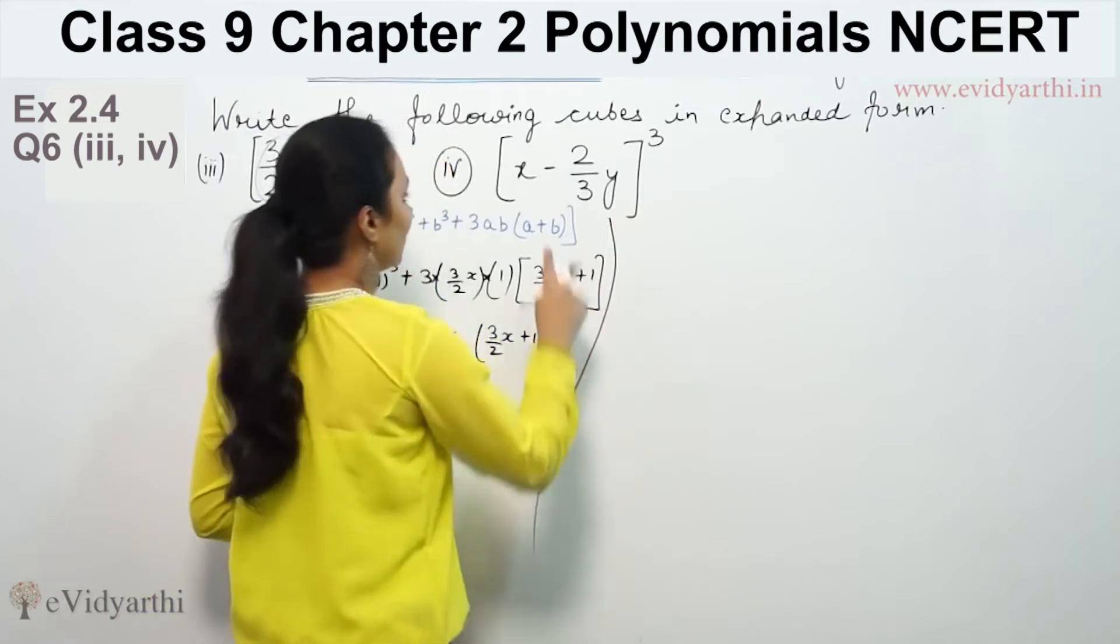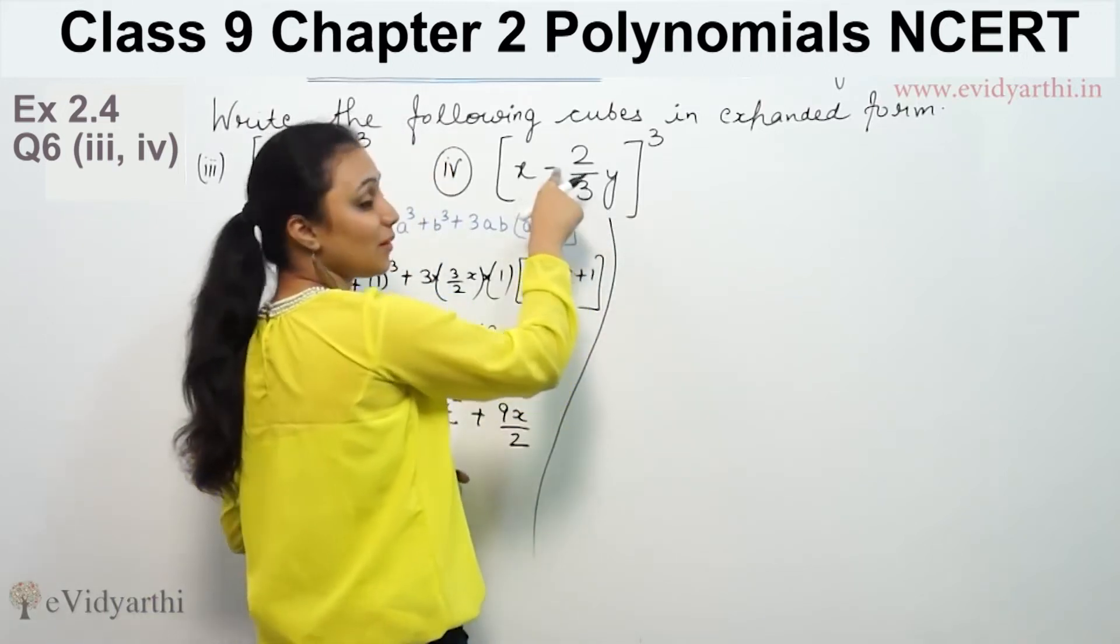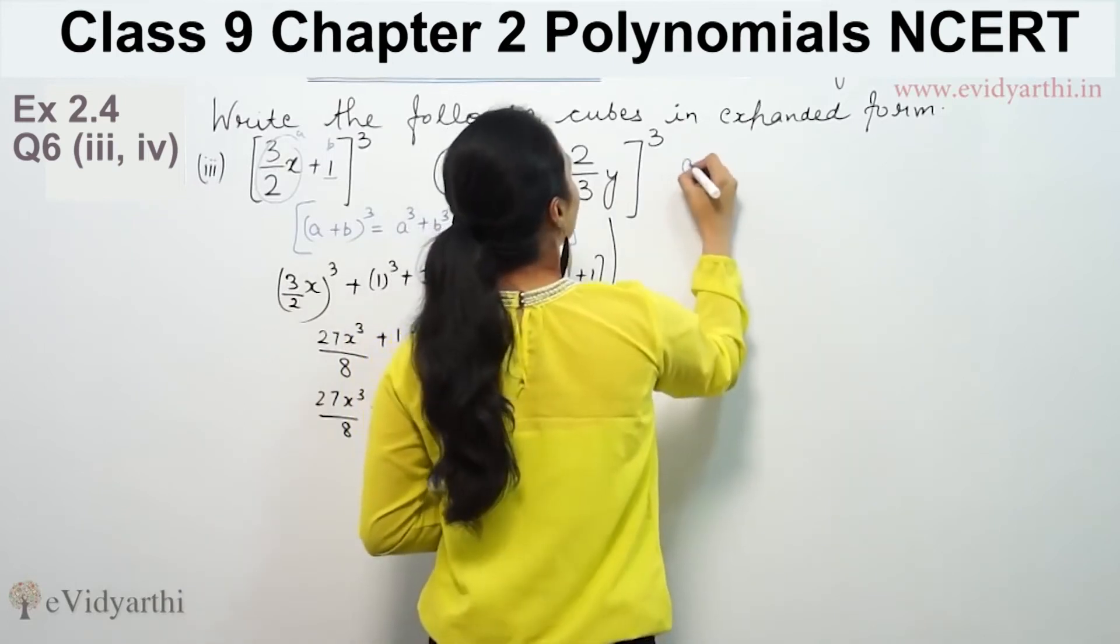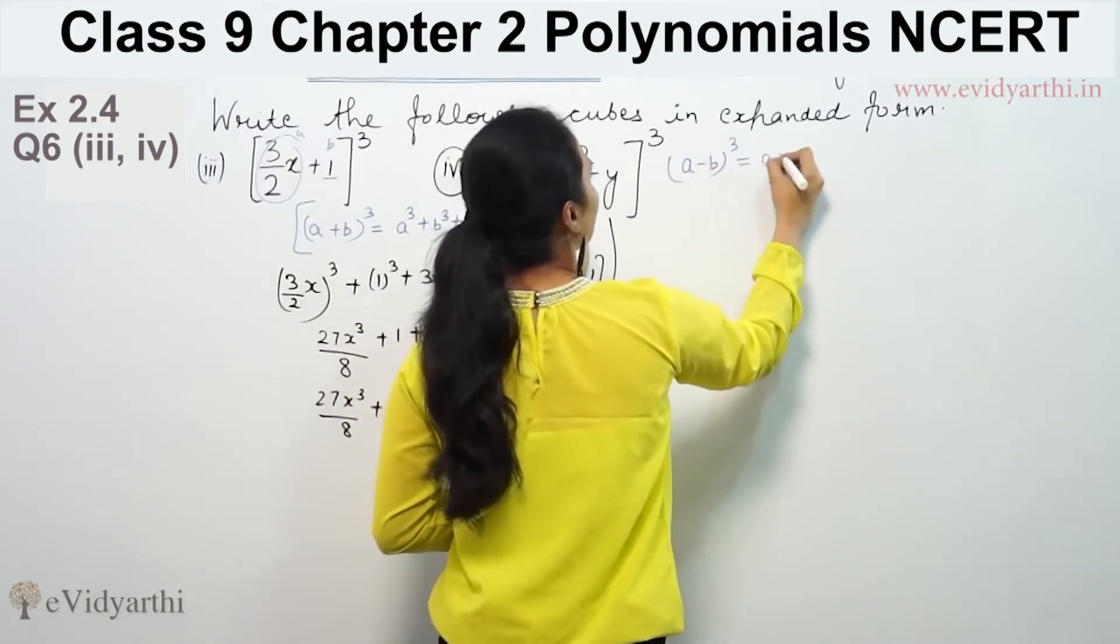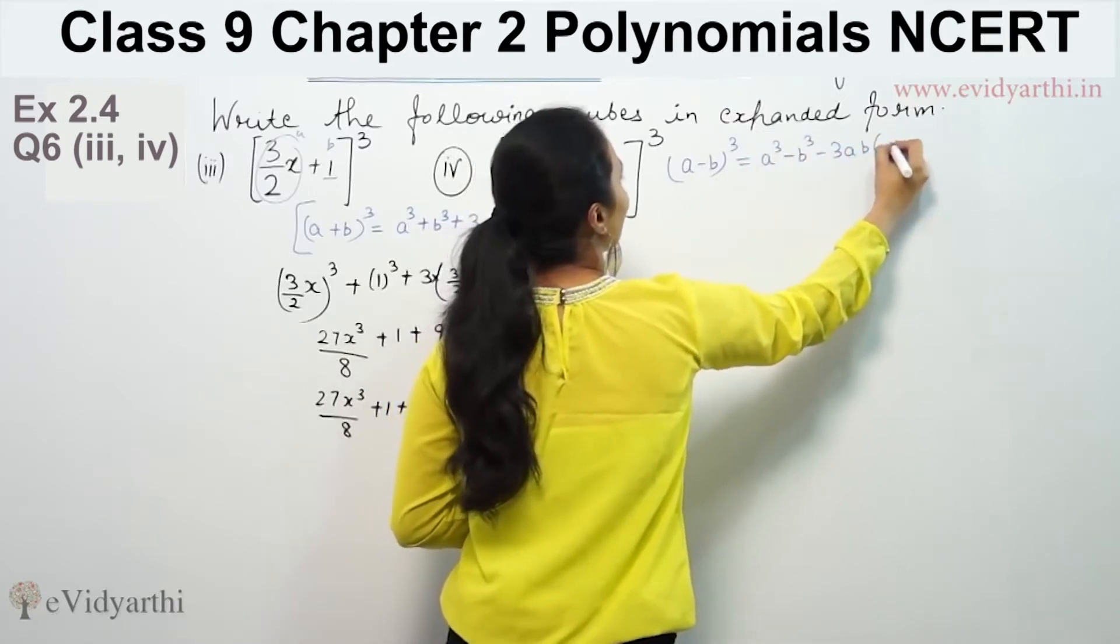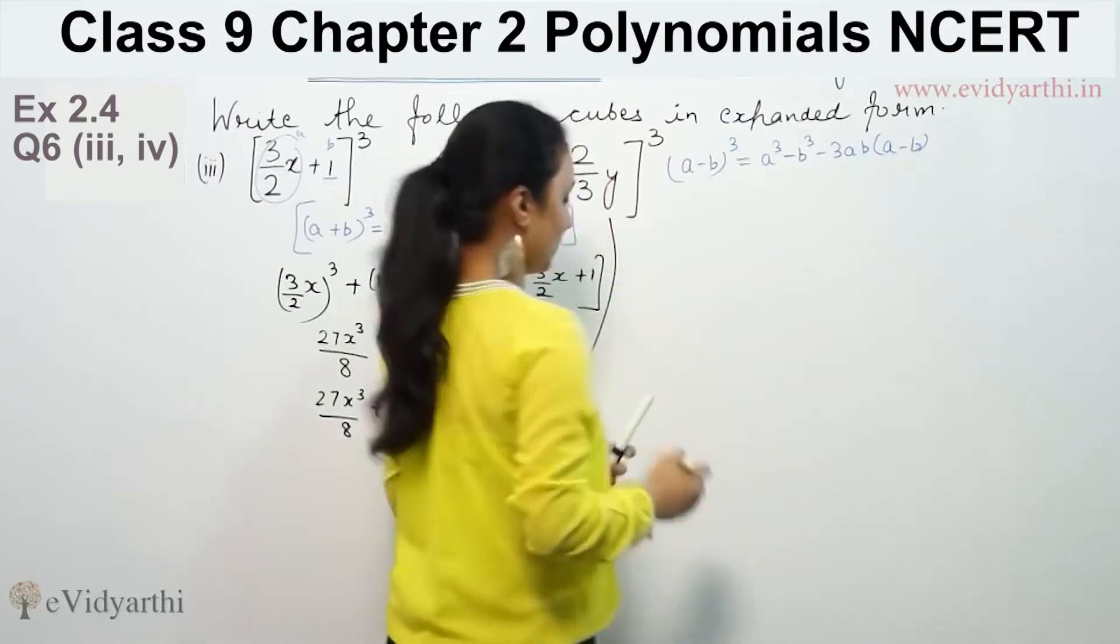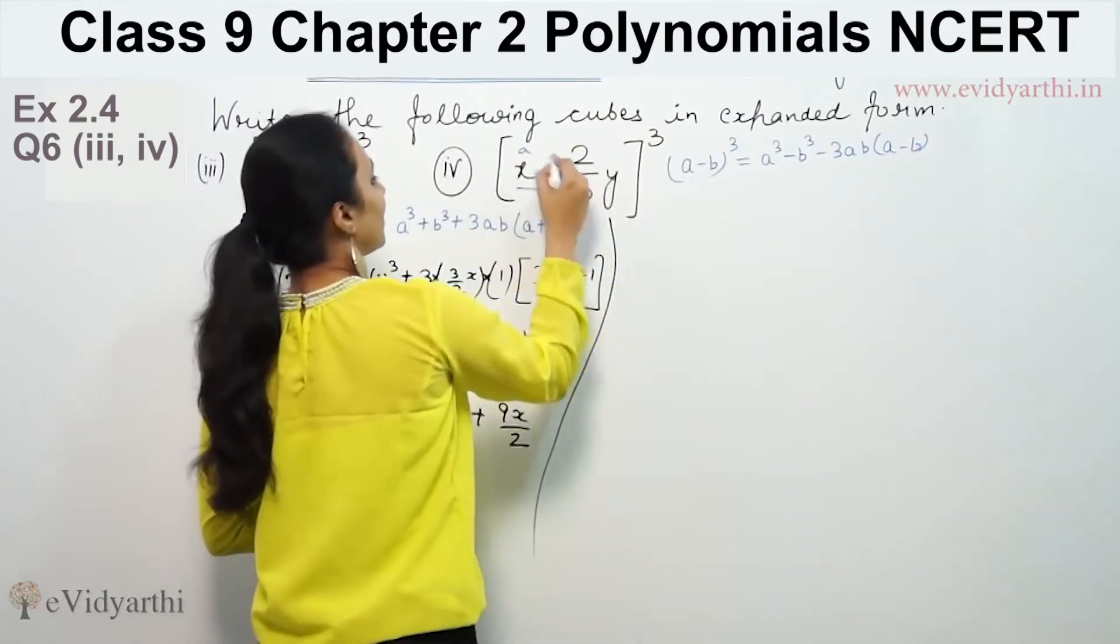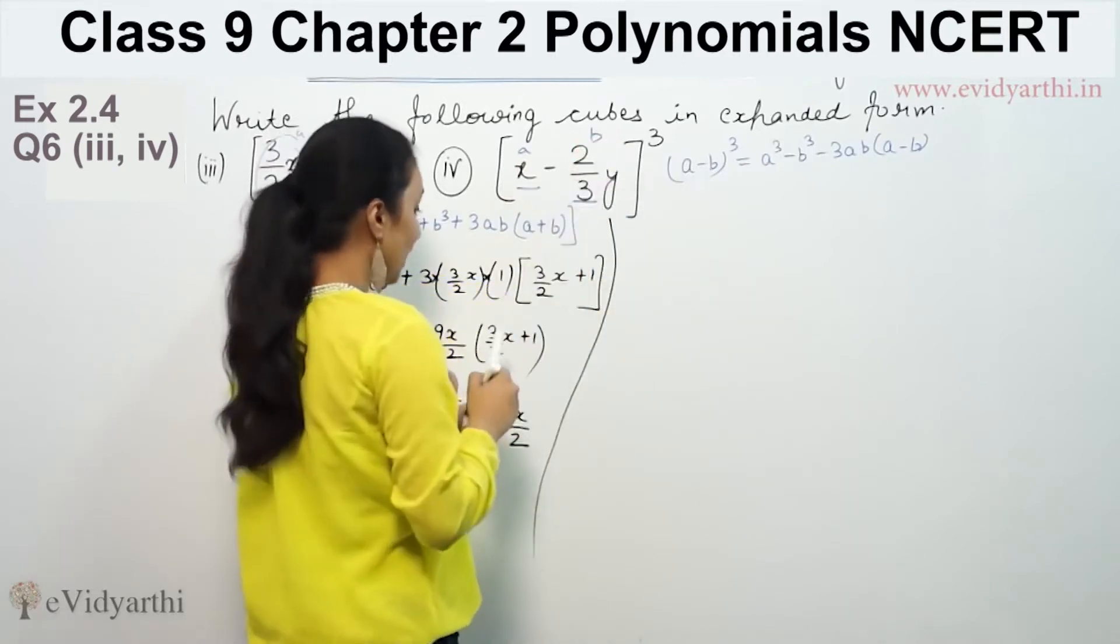Same way, here we have a negative. This is A, this is B, this is minus sign. So we use (A - B)³ = A³ - B³ - 3AB(A - B). In this case, this is A and this is B.